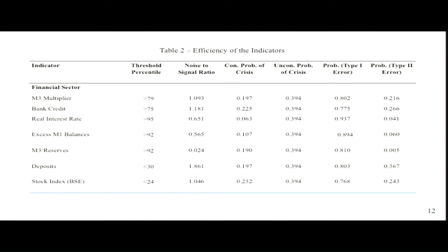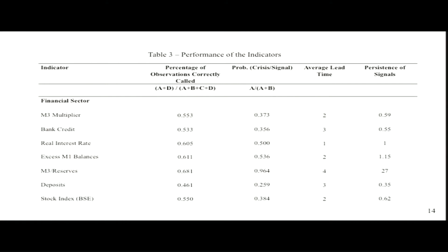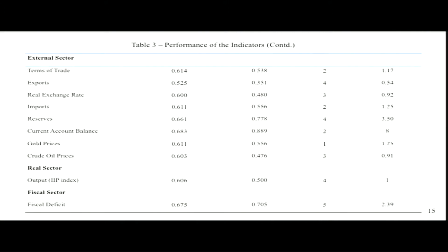Overall, no single variable gives consistent signals throughout all crisis periods — all variables tend to signal just before the crisis. For the 1991 crisis, variables such as fiscal deficit, real exchange rate, reserves, and M3 issued warnings starting from 1988 with the crisis fully unfolding in 1991. There was a stress period in 1993 due to exchange rate regime change, with signals from the stock index, output, and real exchange rate.